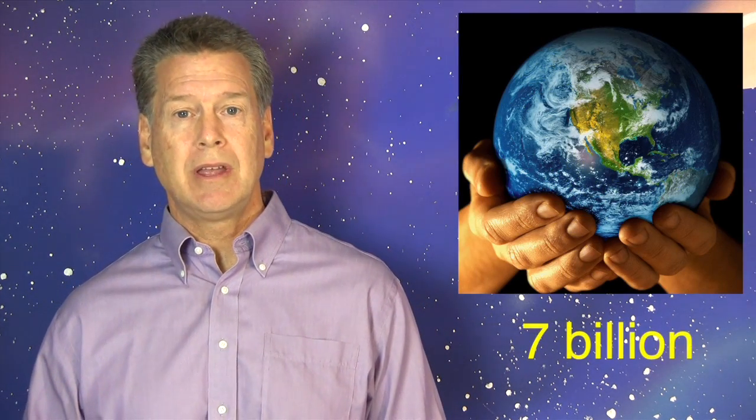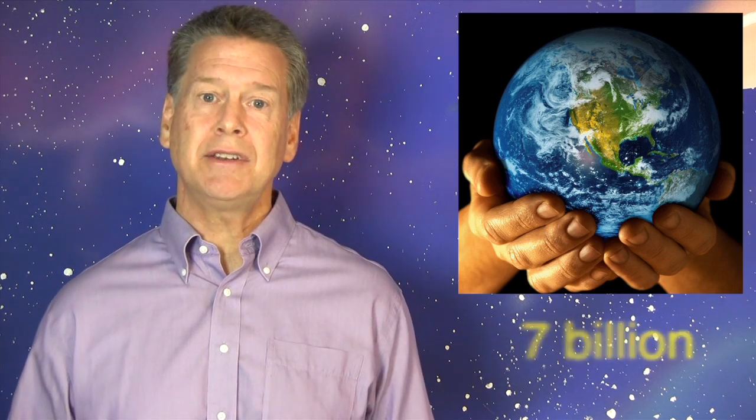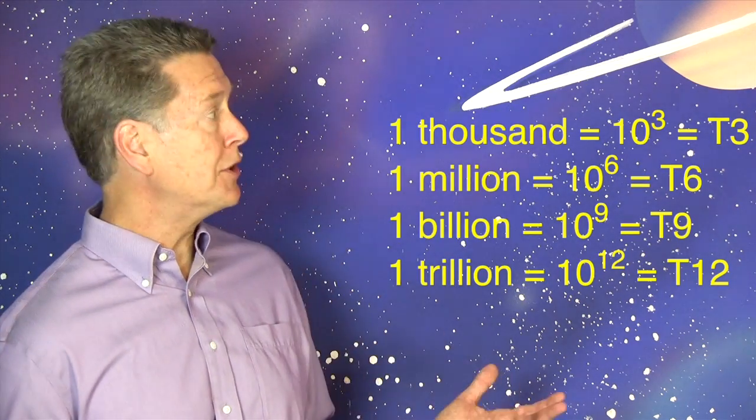Question number three. What is the population of the North American continent? A billion, T9, is a reasonable estimate. Everyone ought to know the approximate population of the planet, around 7 billion. So to think that one of the seven continents has a billion people is reasonable. Certainly more reasonable than the multiple choice alternatives.